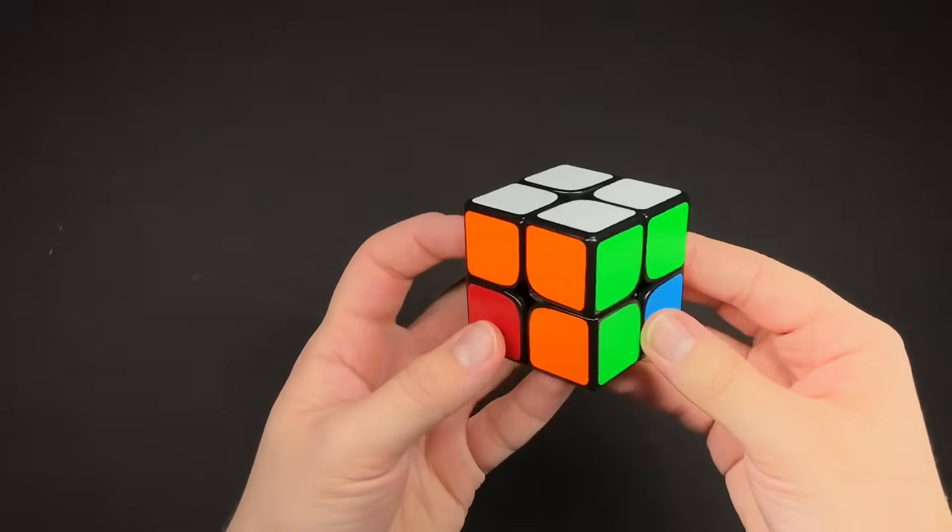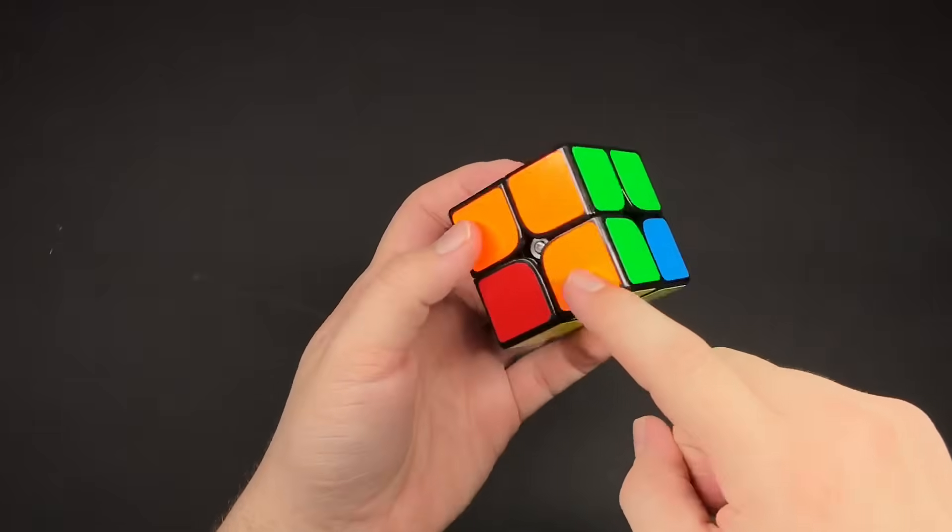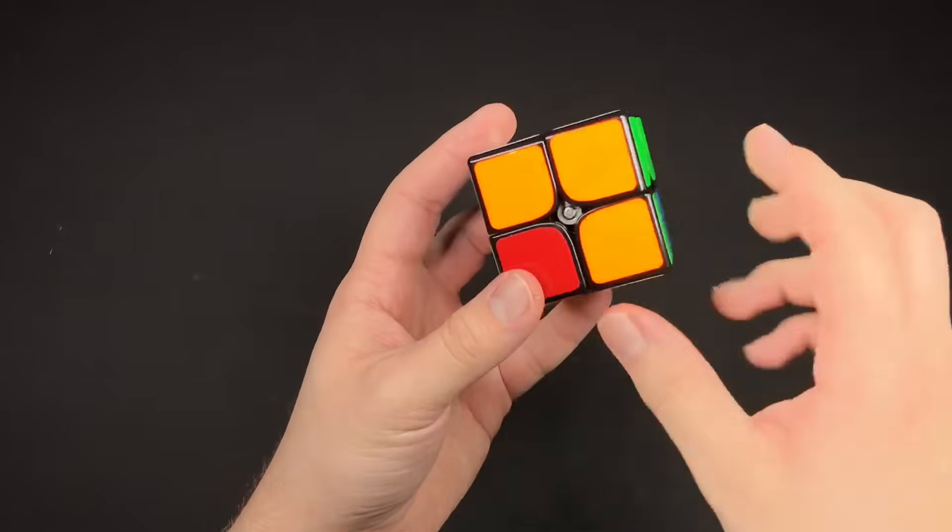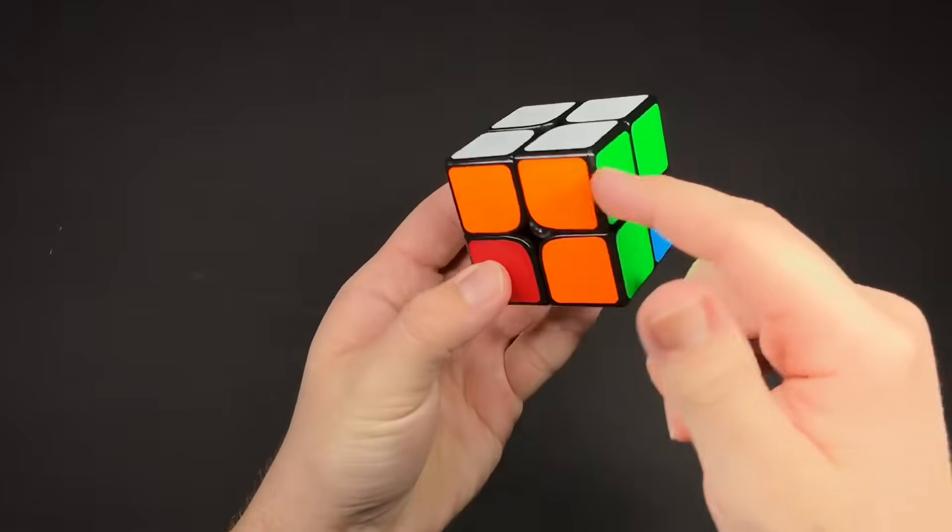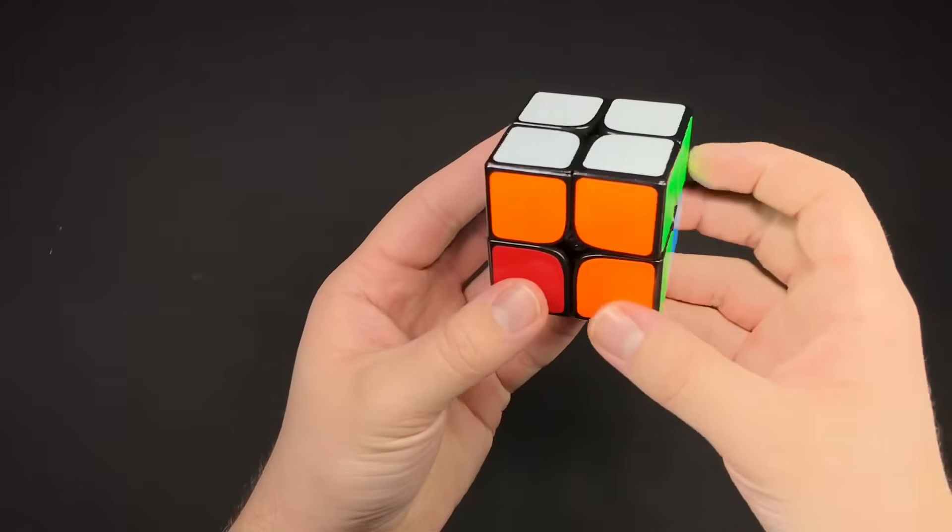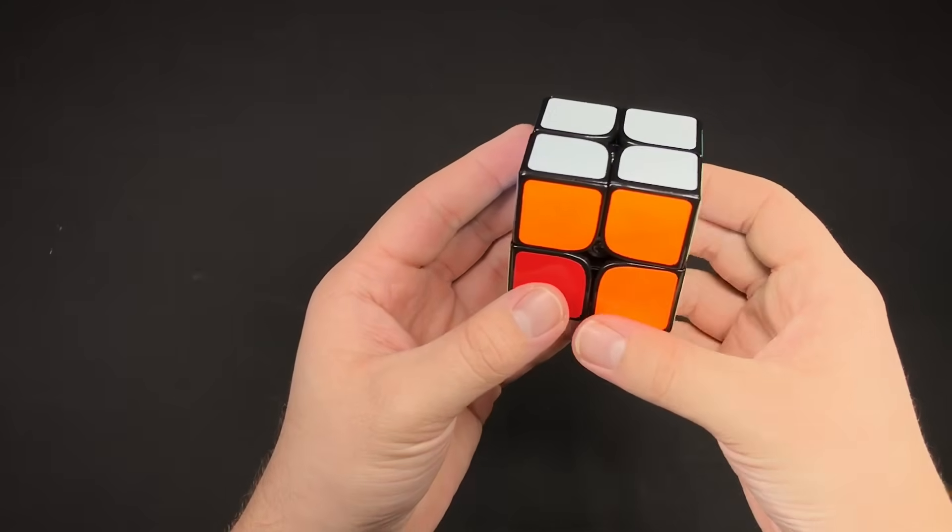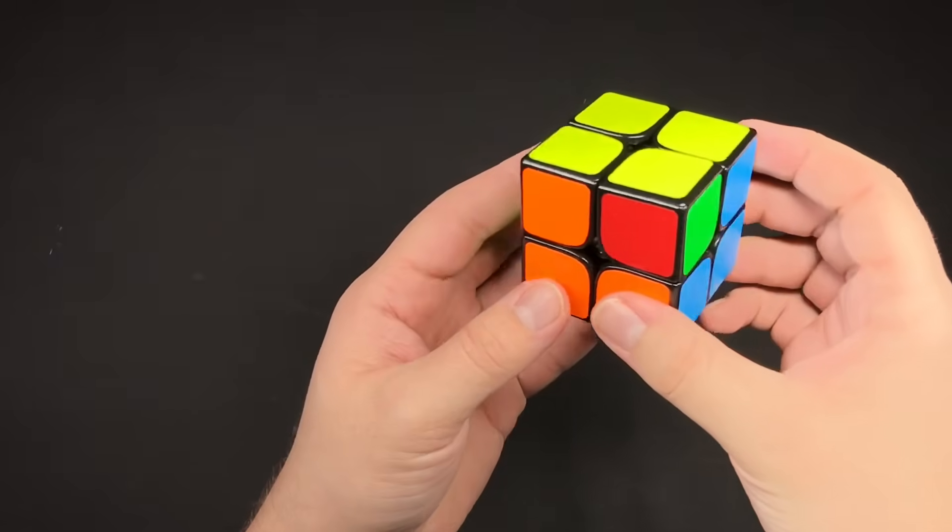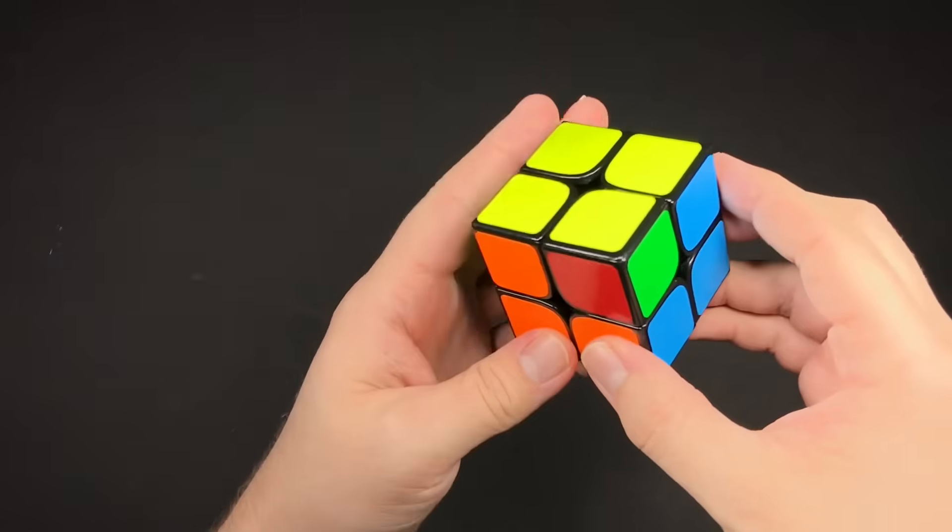Then you can also have this case, where on the bottom, no colors are matching, and then on the top, you have the sides solved. So again, like the other case, you just flip it around and use the same algorithm as the second one.